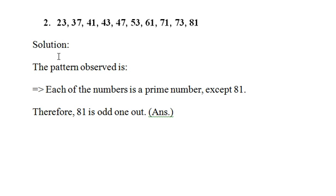Now second question: 23, 37, 41, 43, 47, 53, 61, 71, 73, and 81. There is no even number here - all the numbers are odd. So the first question's pattern cannot be applied here. We can clearly see that 81 is the only number which is not a prime number. Every other number is a prime number. So 81 stands out of the crowd.